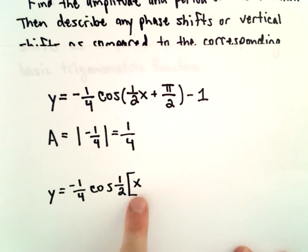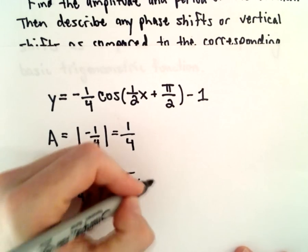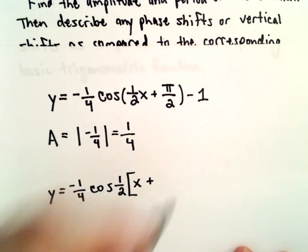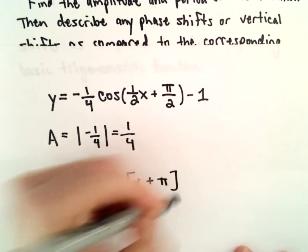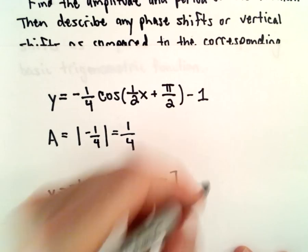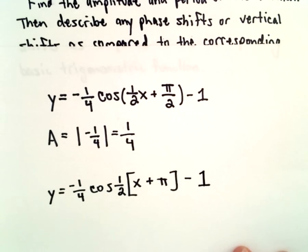So then one-half times x would give us one-half x, and then one-half multiplied by pi would give us our pi over two, and the minus one is still out there.